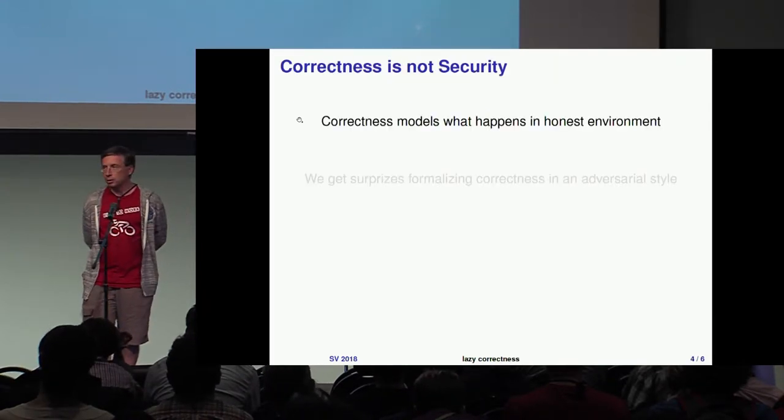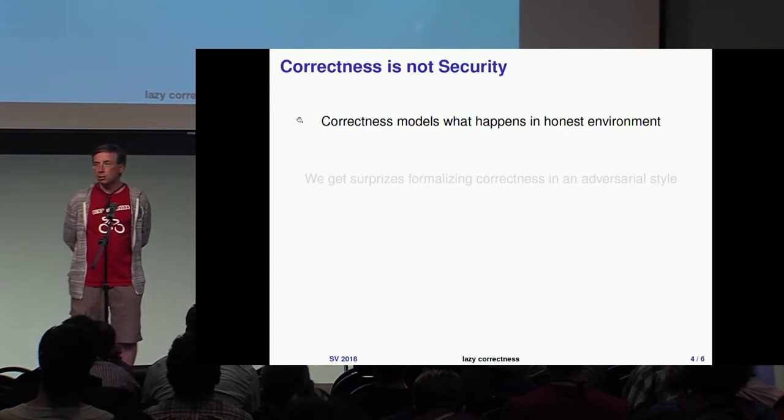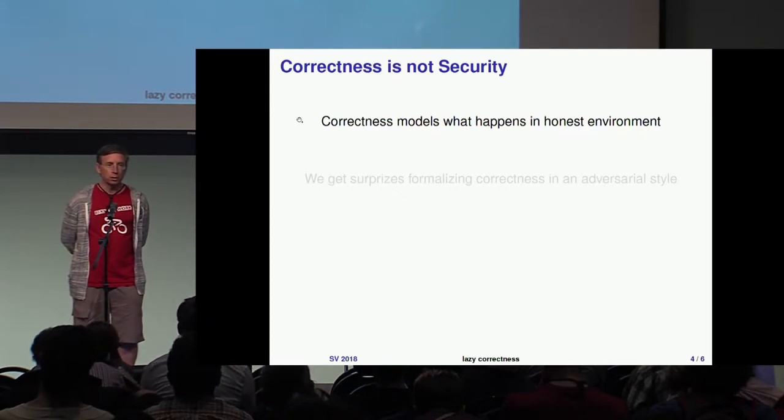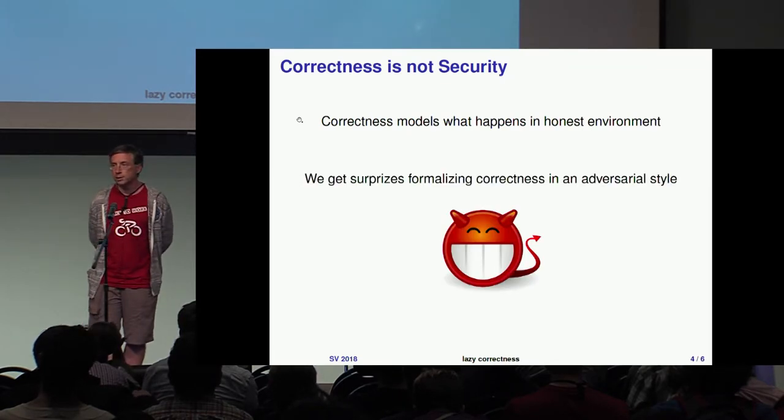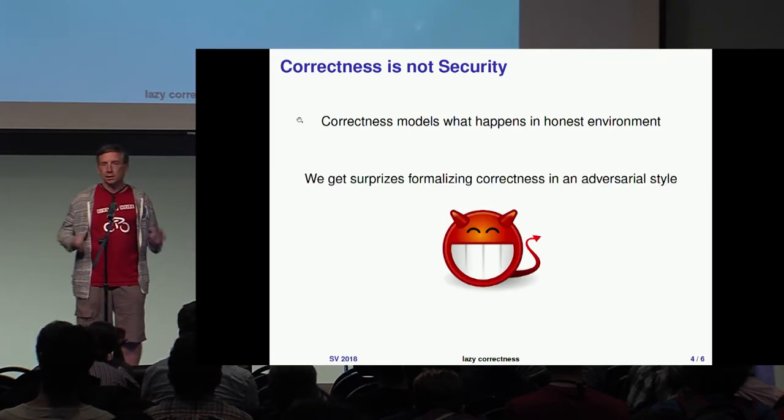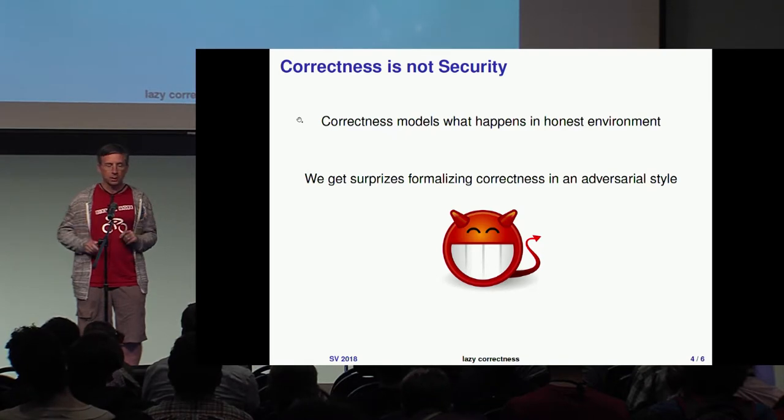Correctness describes what happens in an honest environment. But now in some papers, we have more and more people describing correctness in an adversarial setting, as a kind of game played by an adversary. When we do such a thing, we can have some surprises. There are several examples like this.